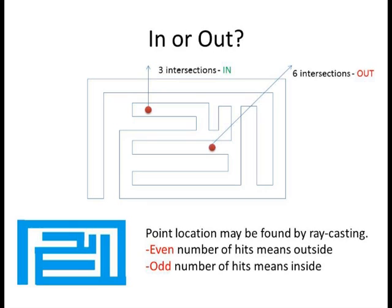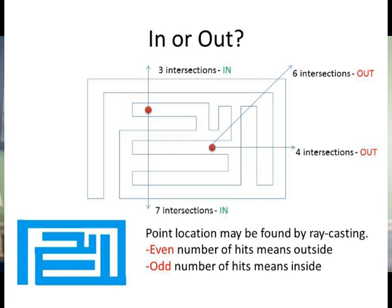In the picture here, the point on top makes three intersections, so it is inside. While the second point has six intersections, so it is outside. The direction of the ray does not really matter. While you may get a different number of intersections, the even or odd attribute will remain the same.